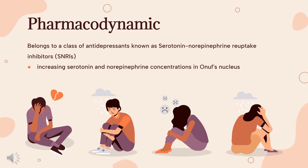While duloxetine has been shown to be effective in both animal models of mood disorders and in clinical trials for the treatment of these disorders in humans, the broad scope of pharmacodynamic effects on mood regulation in the brain has yet to be explained. Increased blood pressure is a common side effect with duloxetine due to vasoconstriction mediated by the intended increase in norepinephrine signaling.